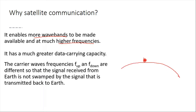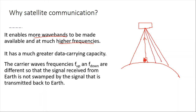Since the uplink and downlink frequencies are different, the signal received from earth is not swamped by the signal transmitted back to earth. The transmitter on earth sends signals to the satellite via uplink, and the satellite distributes signals to different stations on earth via downlink. Because uplink and downlink frequencies are different, there is no interference between the signals.